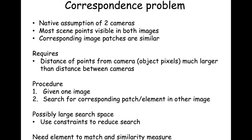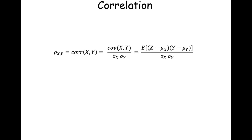The procedure is: take one image, then the next, and search for the corresponding region from the first picture in the other image. This can give a potentially large search space, but you can use constraints to reduce the time and space needed to search. You need some similarity measure to find where part of the first image occurs in the second — you can use statistical correlation for this.